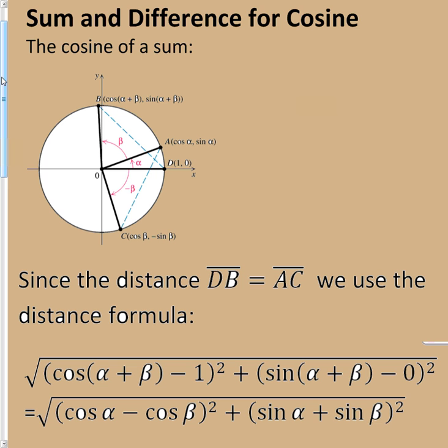So as we take a look here, we have our angle alpha. If we wanted to add our angle beta to it or subtract our angle beta from it, then we can look at our distances. The distance from here to here should be the same, so I'm going to use the distance formula.